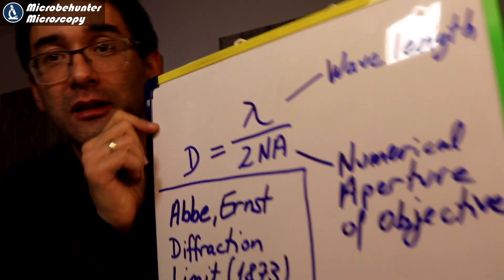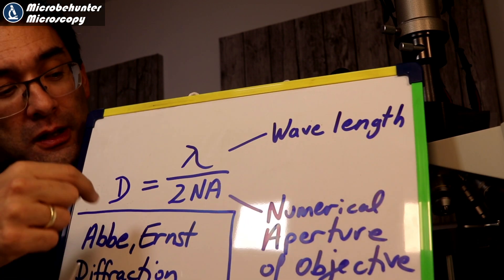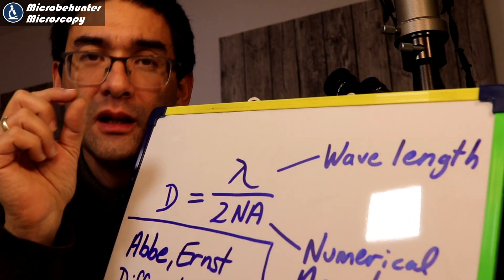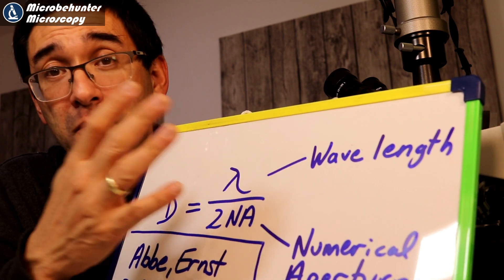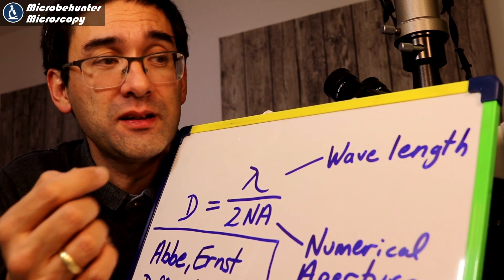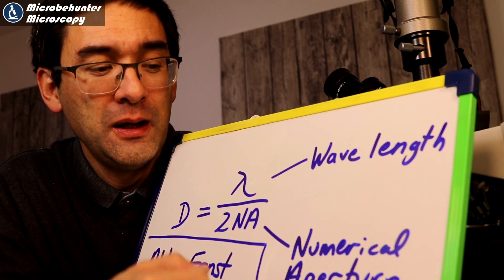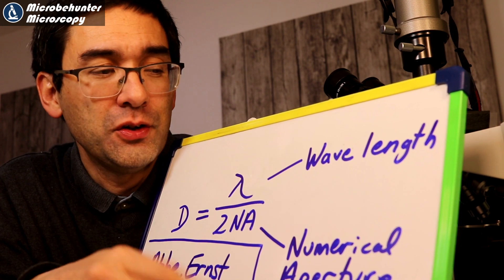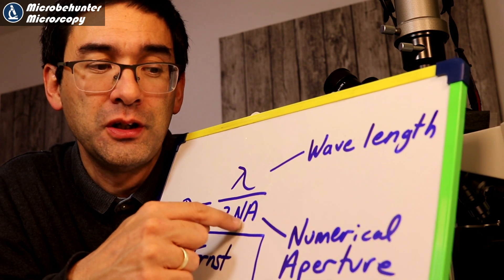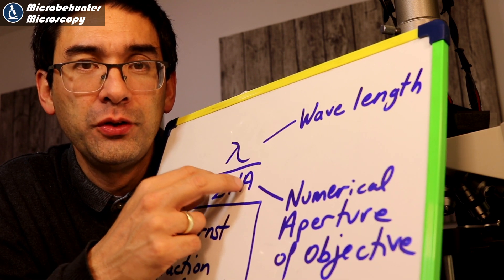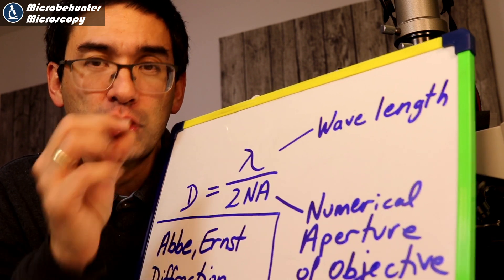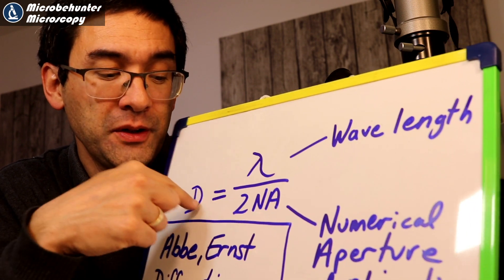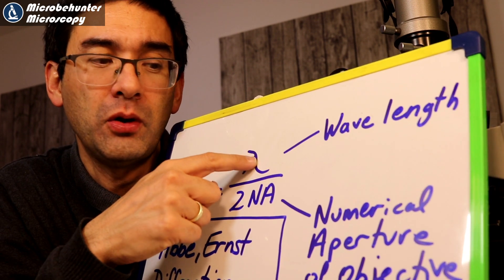The formula relating resolution, wavelength, and numerical aperture was discovered by Ernst Abbe. I have a board here with the formula. D is the resolution — the minimum distance that can still be resolved. The formula is: D equals the wavelength of light divided by two times the numerical aperture. White light is a mixture of wavelengths, so let's say 500 nanometers. A shorter wavelength gives smaller D, meaning better resolution; a larger numerical aperture also gives smaller D.